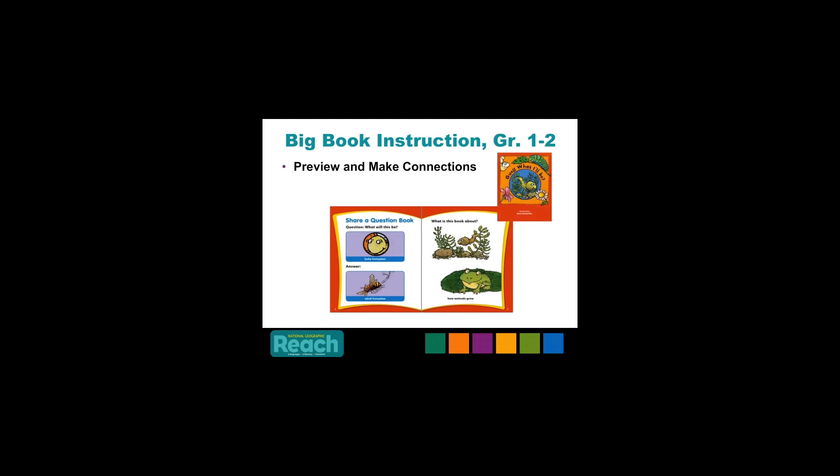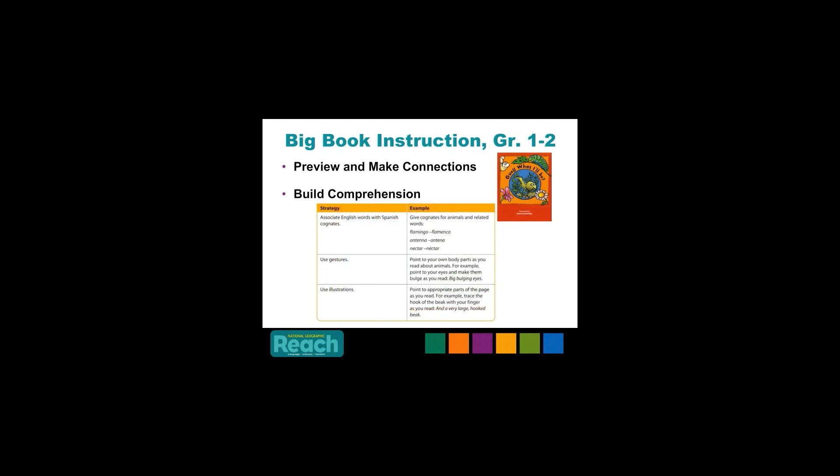In kindergarten, first, and second grade, the big book instruction immediately follows the unit launch. This big book lesson is a one-time lesson that begins with a preview of the big book, allowing students to relate to their own personal experiences and relate those back to the unit launch. Students will have an opportunity to preview the book and make predictions. The big books are also used to build comprehension by front-loading the reading strategy that students will work with throughout the unit. Strategies are provided in the Teacher's Edition to help shelter the story language and provide access to English language learners at all language levels.